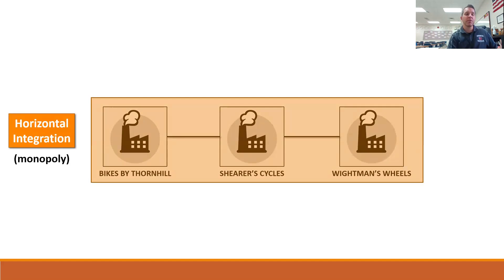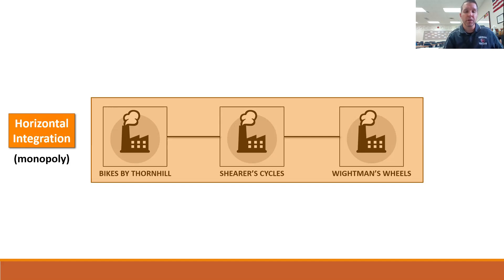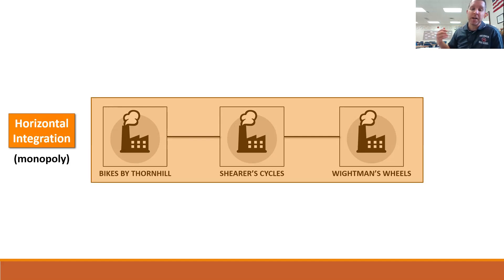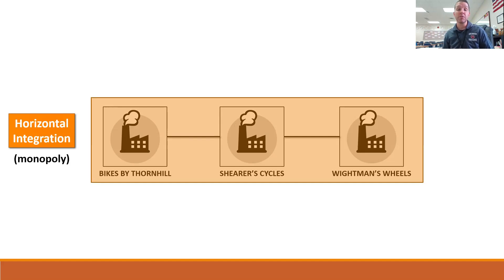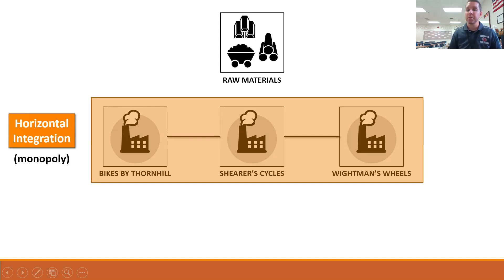There's another tactic one can use to get rich, aside from horizontal integration and monopolies, and it's called vertical integration. When I make my bicycles, I have to buy all kinds of raw materials — I need to buy the metal, the rubber for the tires, the leather for the seats. I need all of these raw materials to produce a bicycle, and I have to get them from somebody because I don't have them. That costs me money before I can even start.